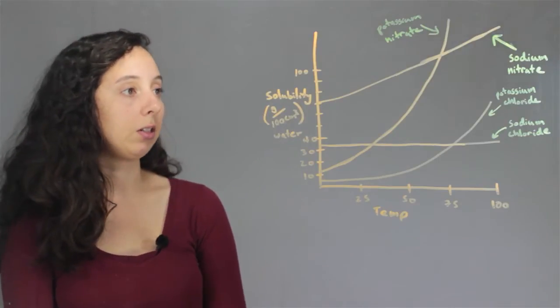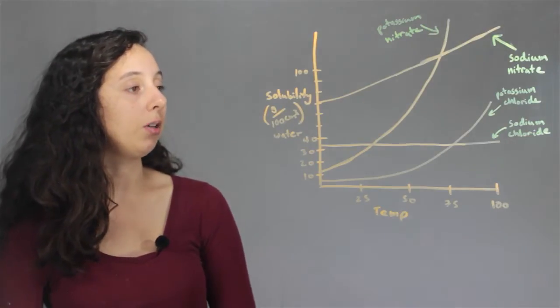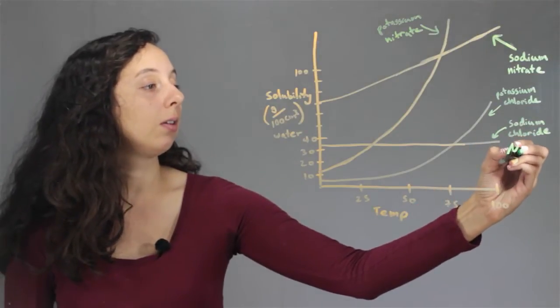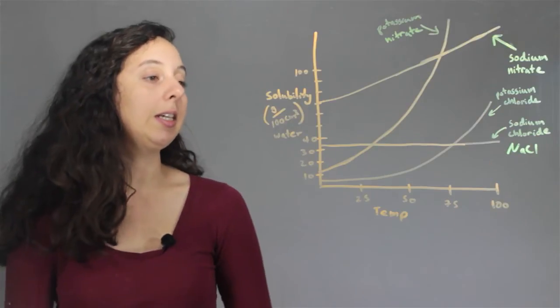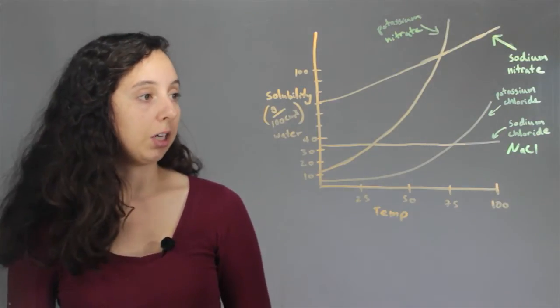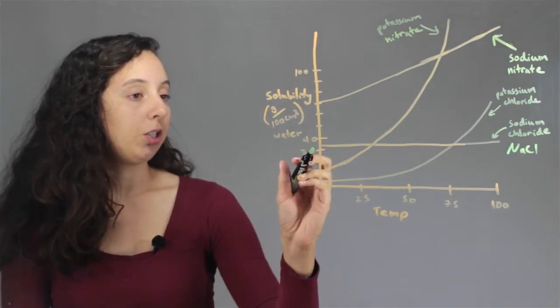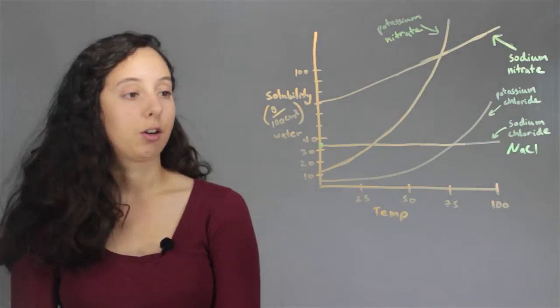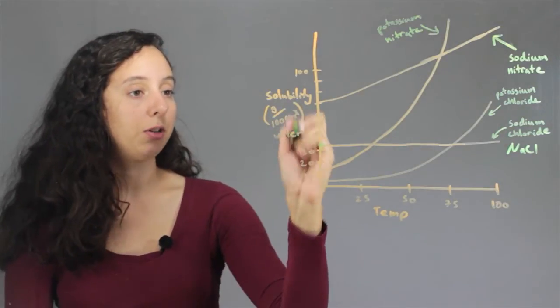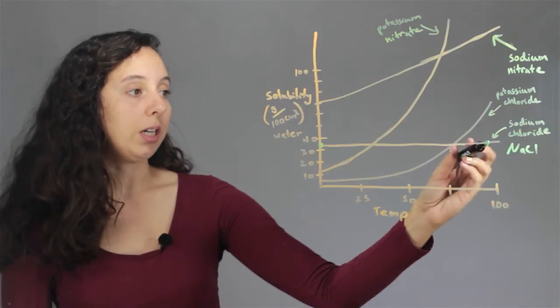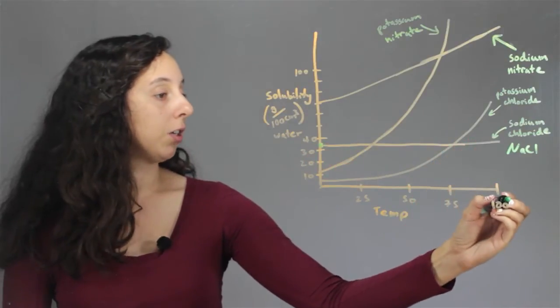Alright. So let's take a look at some different solutes. So first we have something we should all recognize, sodium chloride or table salt. And we can see this actually has a really interesting or boring solubility curve, right? Because it pretty much starts out at 35 grams per 100 centimeters cubed of water, and it basically only rises to 40 all the way to 100 degrees Celsius.